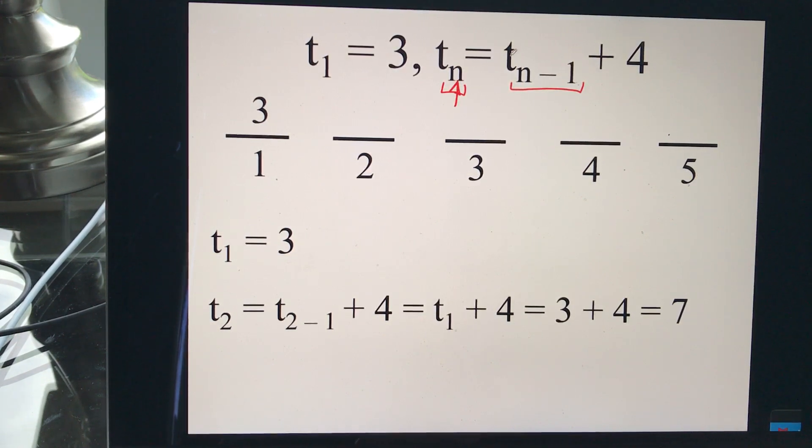Now, term 2 is equal to the formula. So, I just put a 2 in here. Term 2 is equal to term 2 minus 1. So, term 2 is equal to term 2 minus 1, which is 1, obviously, plus 4. So, 2 minus 1 is 1. And term 1 is 3. Right here, this is term 1, 3. So, it's just saying 3 plus 4, which is 7. It's really just saying your term is just go to the previous term and add 4. That's all it's saying.